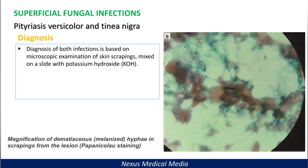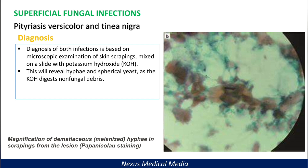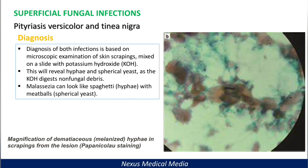Diagnosis of both infections is based on microscopic examination of skin scrapings mixed on a slide with potassium hydroxide (KOH). This is a magnification showing dematiaceous melanized hyphae from scrapings of the lesion using Pap-nicol staining. Mixing skin scrapings with potassium hydroxide reveals hyphae and spherical yeast, as the KOH digests the non-fungal material. For Malassezia, the appearance is described as 'spaghetti and meatballs' — spaghetti representing hyphae and meatballs representing spherical yeast — and this pattern is specific for Malassezia, i.e., pityriasis versicolor.